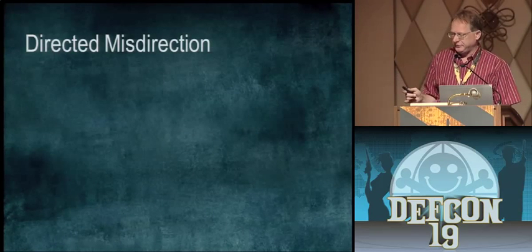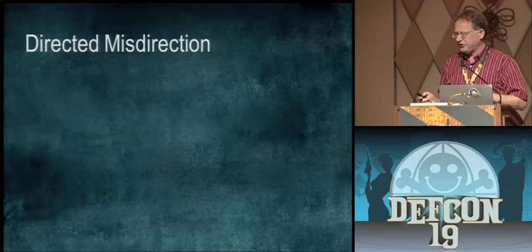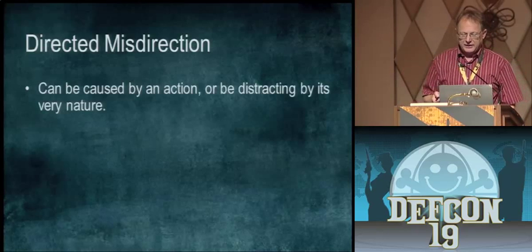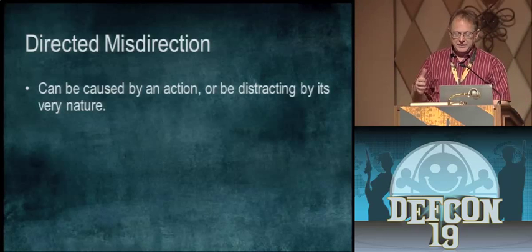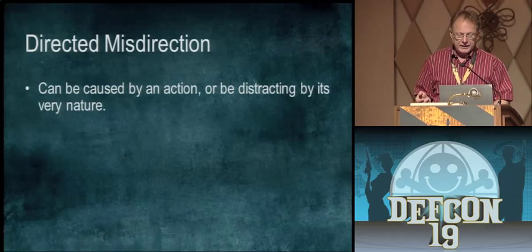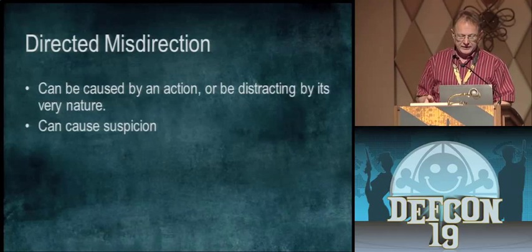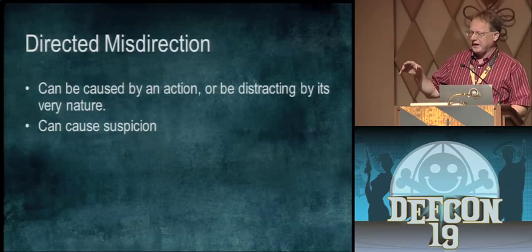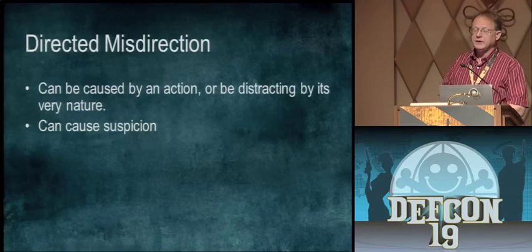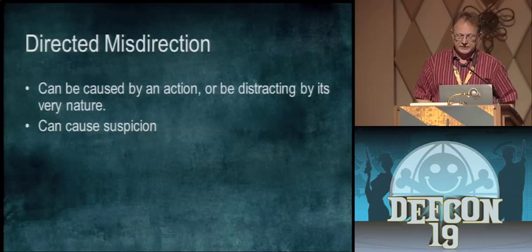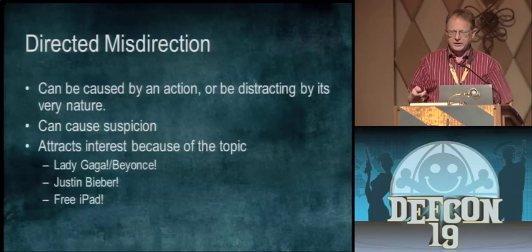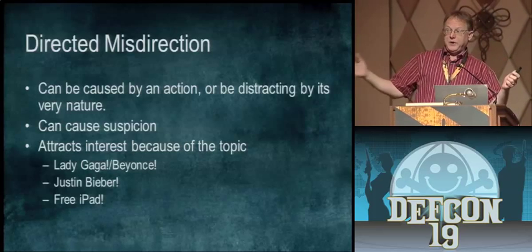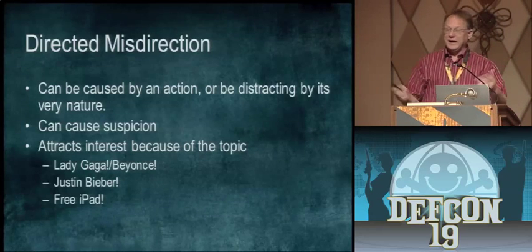There are different kinds of misdirection. The first is directed misdirection — where you say 'look over there.' It has to be something logical that makes sense; if it doesn't, it might be suspicious and they may not look where you want them to. You've got to find out what attracts their attention — Lady Gaga, Justin Bieber, or a free iPad. That gets people's attention and makes them stop thinking about certain things.